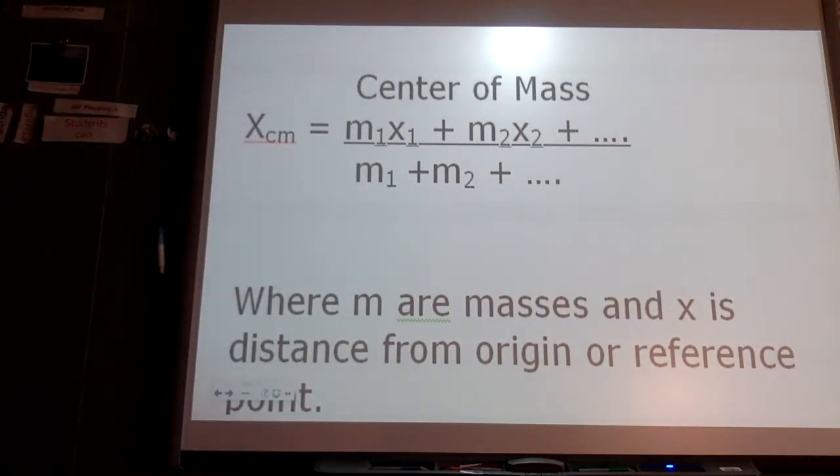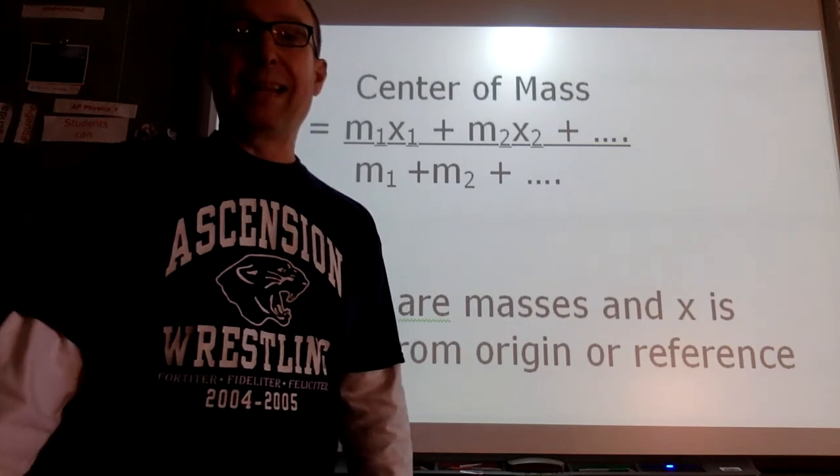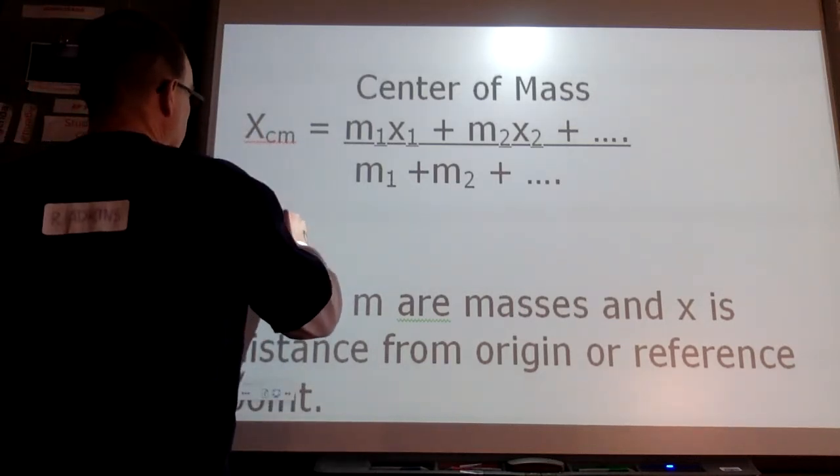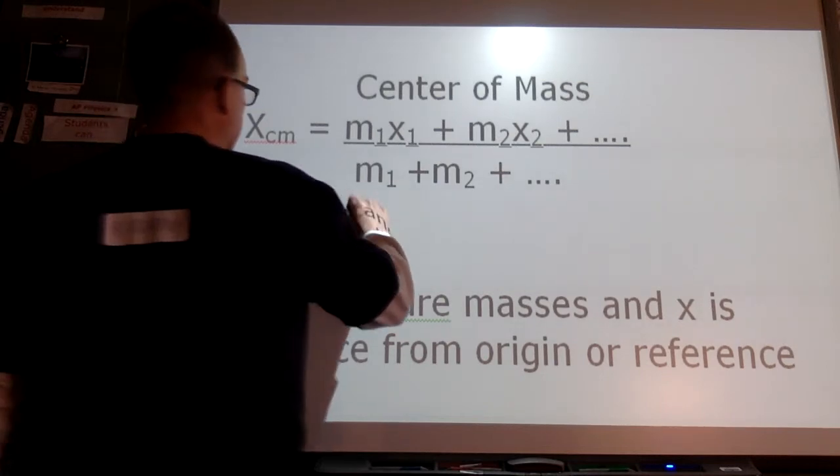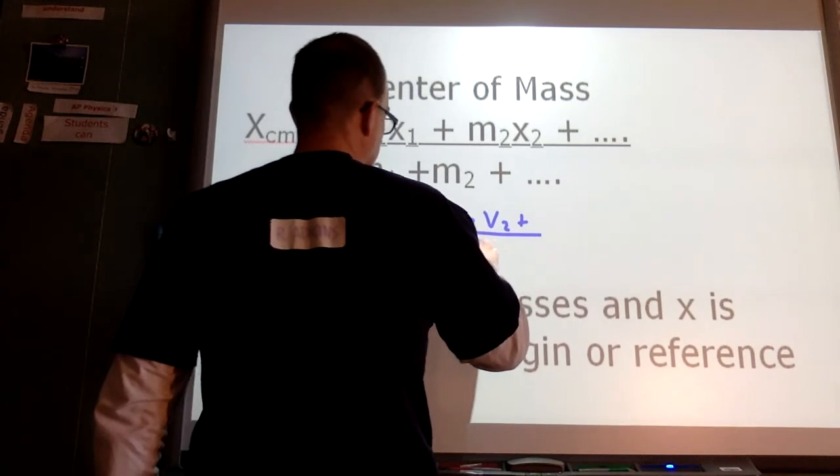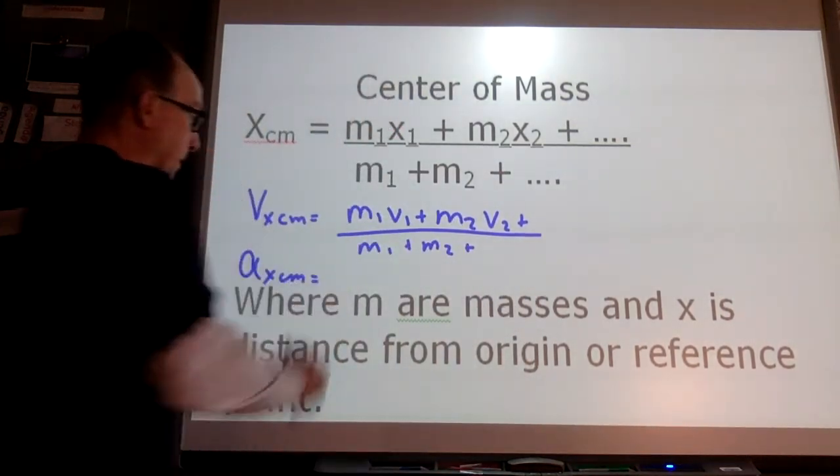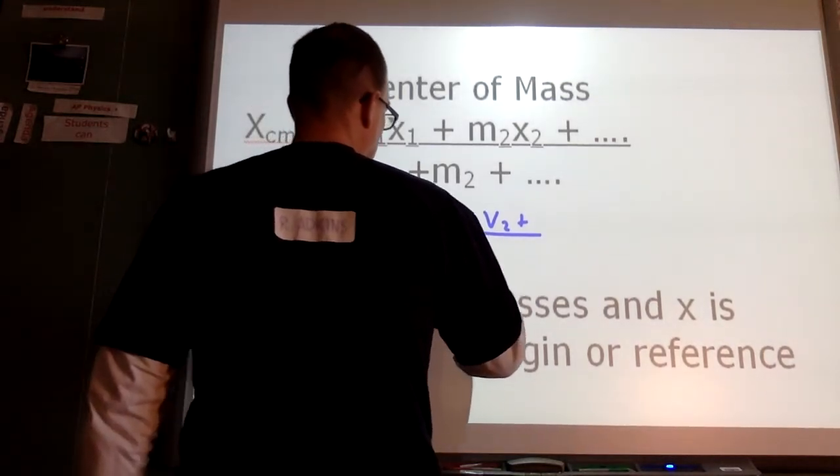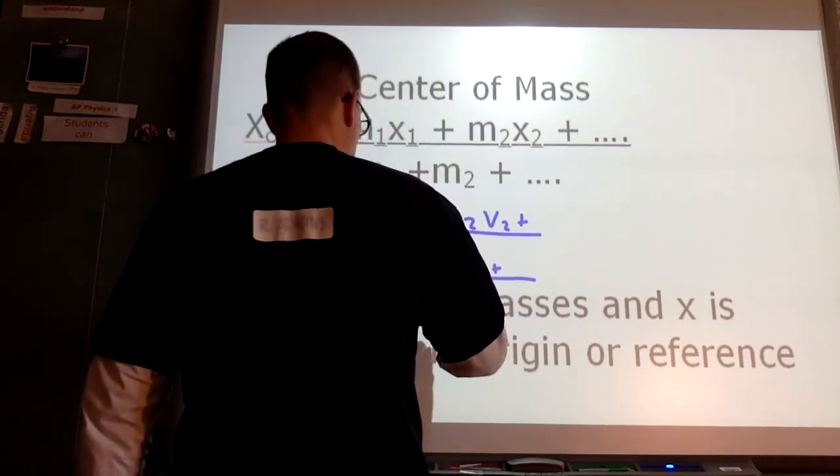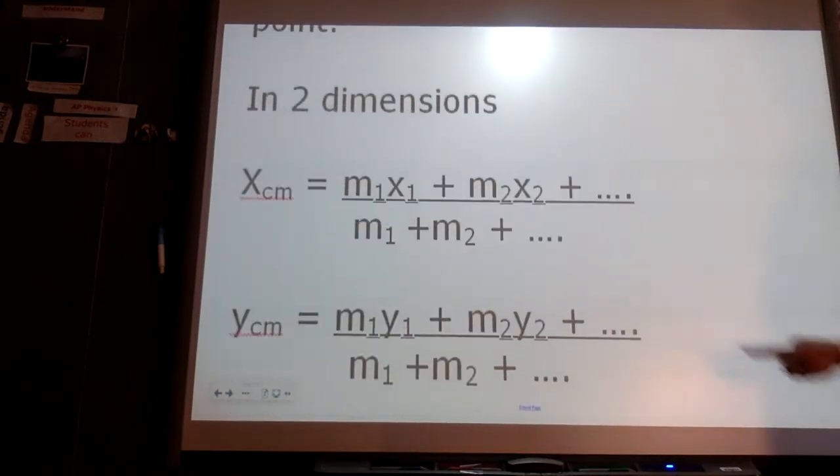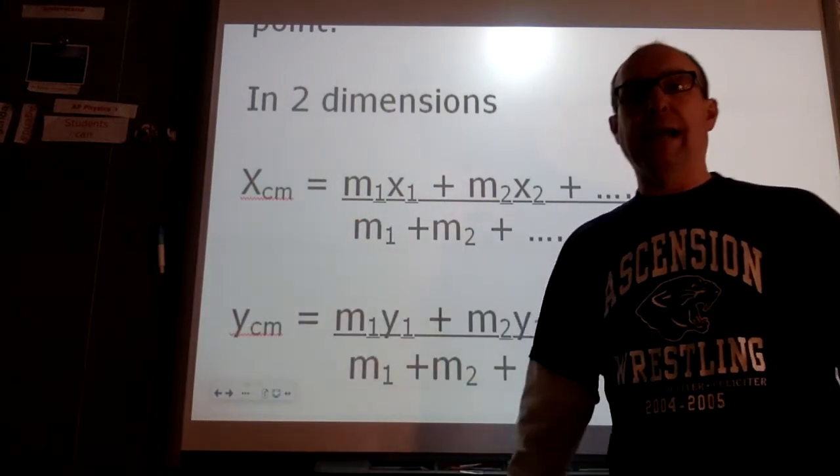Center of mass is given as M1X1 plus M2X2 plus dot dot dot over M1 plus M2. We can think about the velocity of the center of mass by taking the derivative of this with respect to time. So the velocity is M1V1 plus M2V2 plus over the sum of the masses. And then our acceleration would be the derivative of this. And so you can rewrite our center of mass or mass times acceleration as well. So in two dimensions, you would consider what the X is and what the Y is. And I'll do a couple examples for you guys.